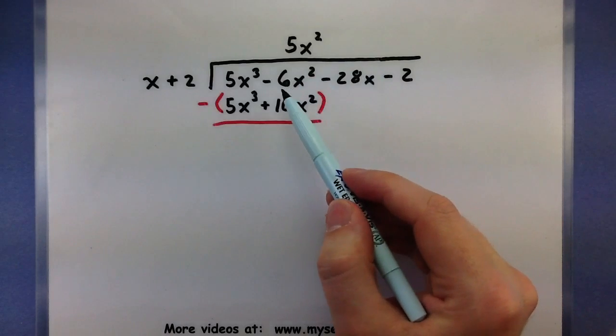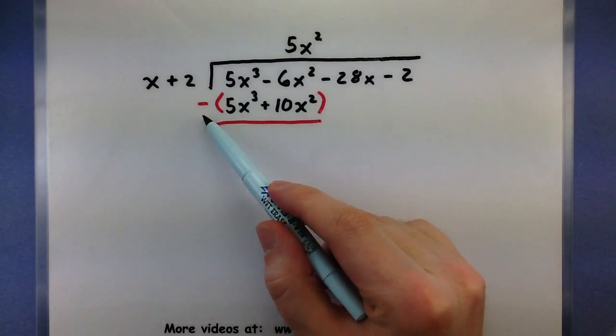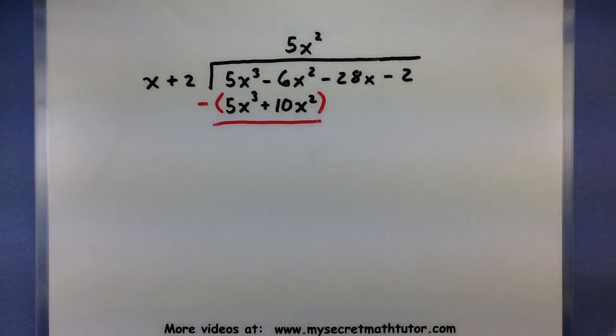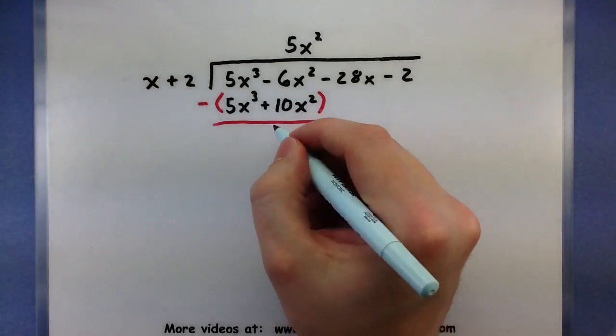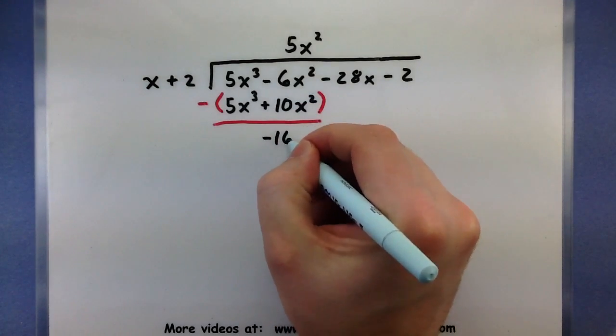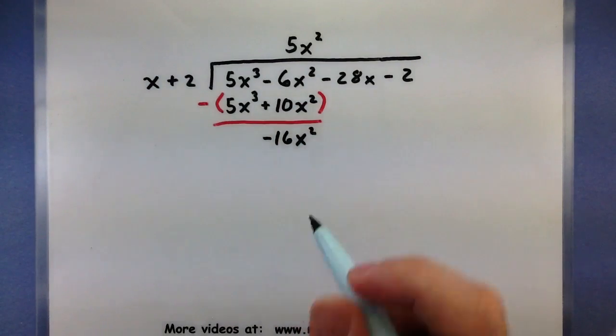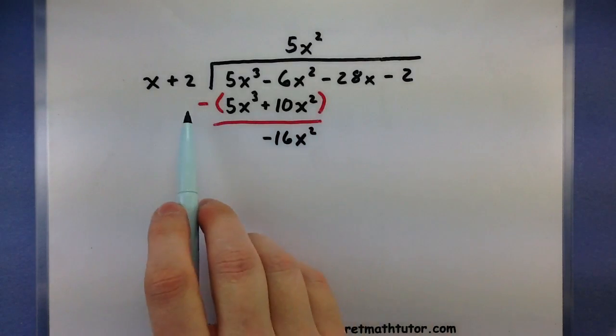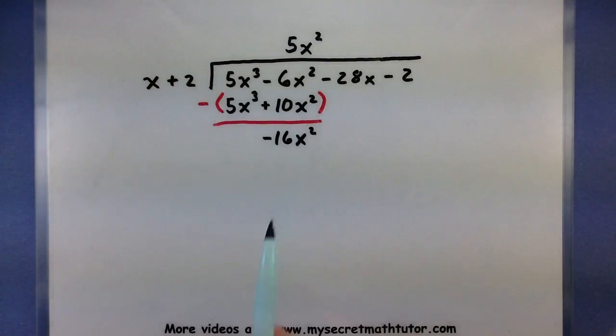On to the next term. A -6x² minus a 10x², so -10 - 6, looks like I'm at a -16x². The reason why I'm putting on these parentheses is so you can subtract away all of the terms. You don't want to miss any signs in there.